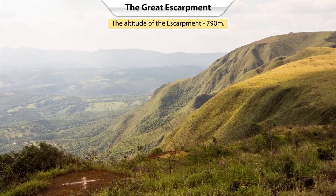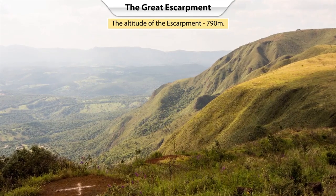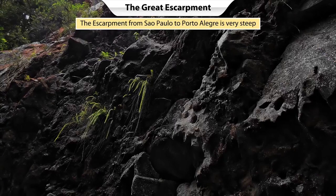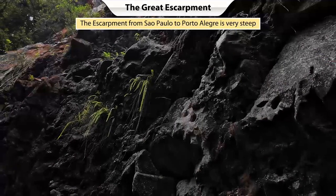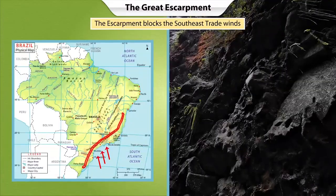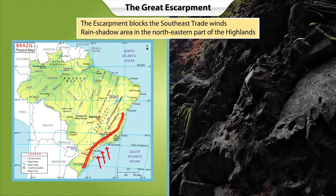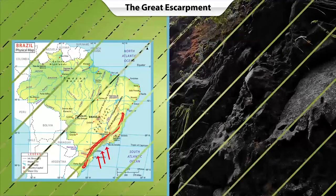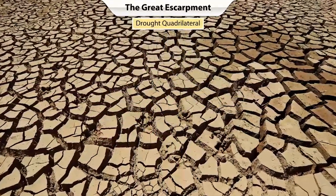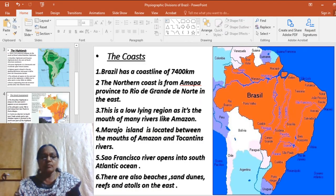The altitude of the escarpment is 790 meters, though in some regions the height decreases gradually. The escarpment, particularly from Sao Paulo to Porto Alegre, is very steep. It blocks the southeast trade winds, giving rise to the rain shadow area in the northeastern part of the highlands. This region to the north is known as the drought quadrilateral.